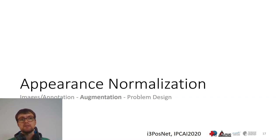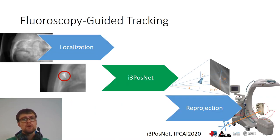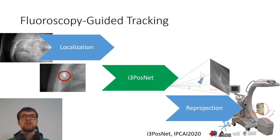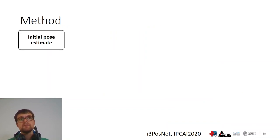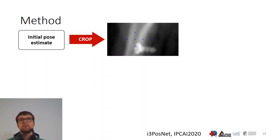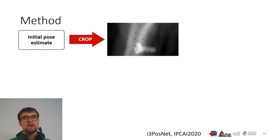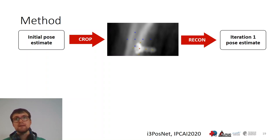Next, I want to discuss appearance normalization. I3PosNet takes as input an x-ray at an initial pose, and as output it returns the pose with respect to the projection geometry. The method goes as follows in three steps. First, it takes the initial pose and uses that to crop a patch around the initial pose. Then, a CNN predicts landmarks that are virtually placed on the instrument. Finally, we use those landmarks to reconstruct the pose of the instrument.